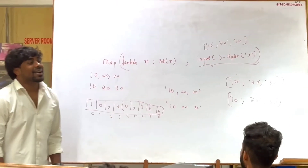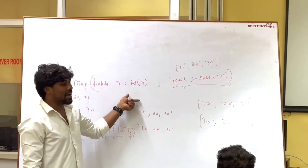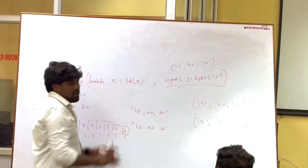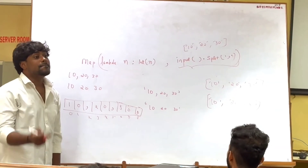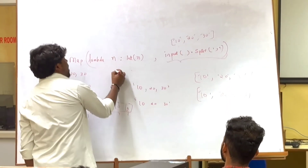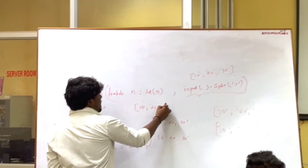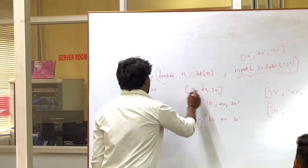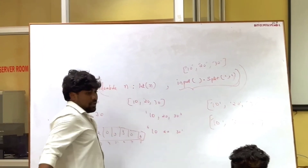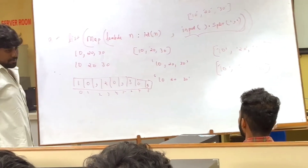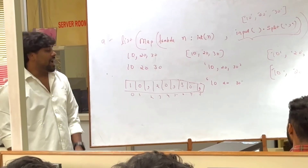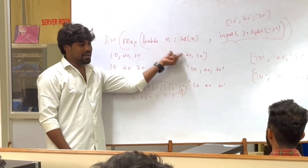Map will get the data, convert it, and return a map object. The map object has 10, 20, 30 at indices 0, 1, 2. Each element goes into int() and is converted. This map will return a map object. If you want to store it in a list, you convert it to list form, like: a = list(...).